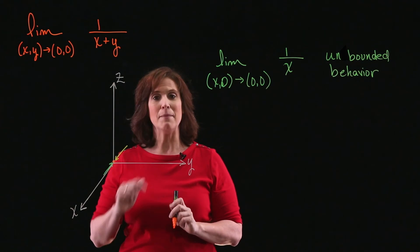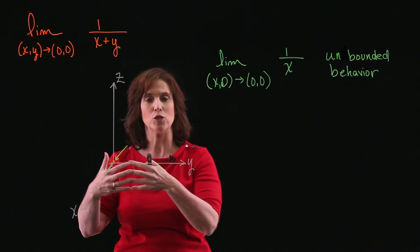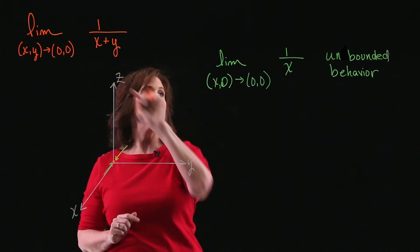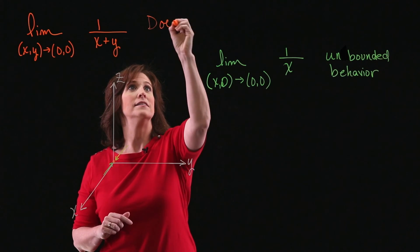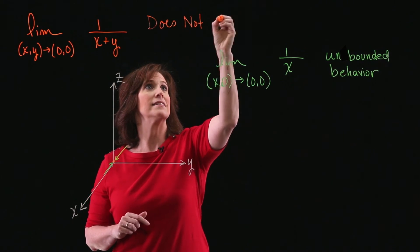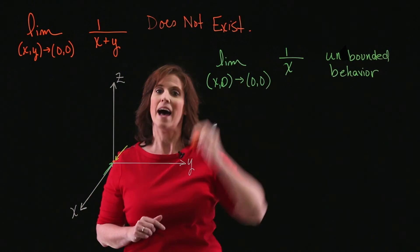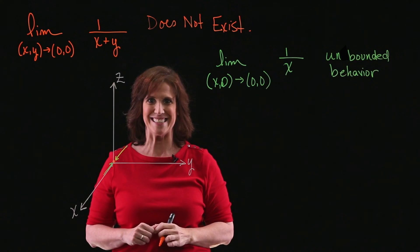So remember, if the limit actually exists, everything has to be going toward the same value. And because that's not happening, this limit overall does not exist. I hope that was helpful. Thanks.